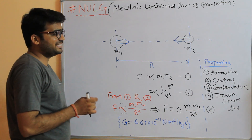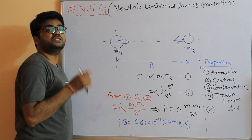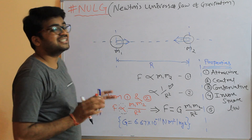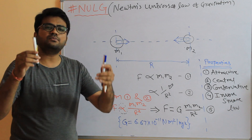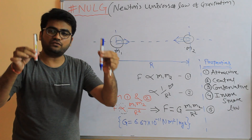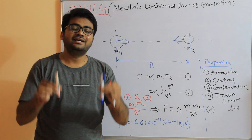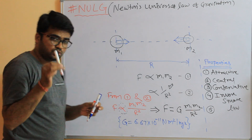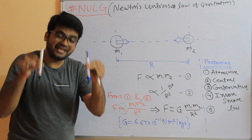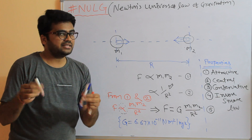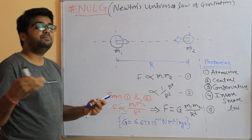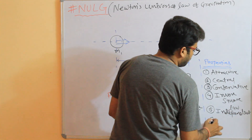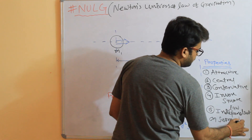Fifth property — this is very important: this force does not depend on the medium in which the force is measured. If we have two masses M1 and M2, and we measure the force of attraction between them in air and in water, keeping the distance and masses the same, that force of attraction always remains the same. So this force is independent of the surrounding medium.